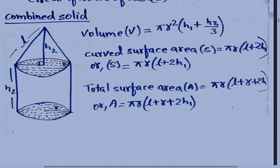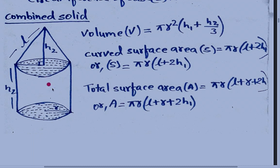Here H1 means the height of the cone, and S means the curved surface area. The total surface area is equal to π R (L + R) + 2π R H1. Using this formula, we will find the volume, curved surface area, and total surface area of the combined solid figure — the cone and cylinder combined into a single figure.